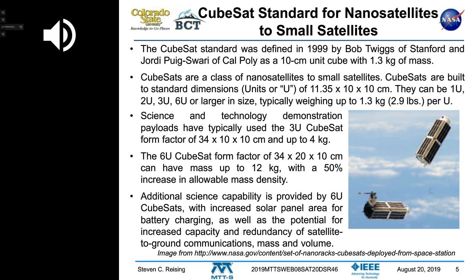This CubeSat standard was defined 20 years ago by colleagues at Stanford University and Cal Poly as a 10-centimeter cube with 1.3 kilograms of mass — about four inches on a side, about three pounds per U. They can be not only one U; they can go to much larger in size. Typical sizes are one, two, three, or six U, and right now some people are working on 12U satellites.